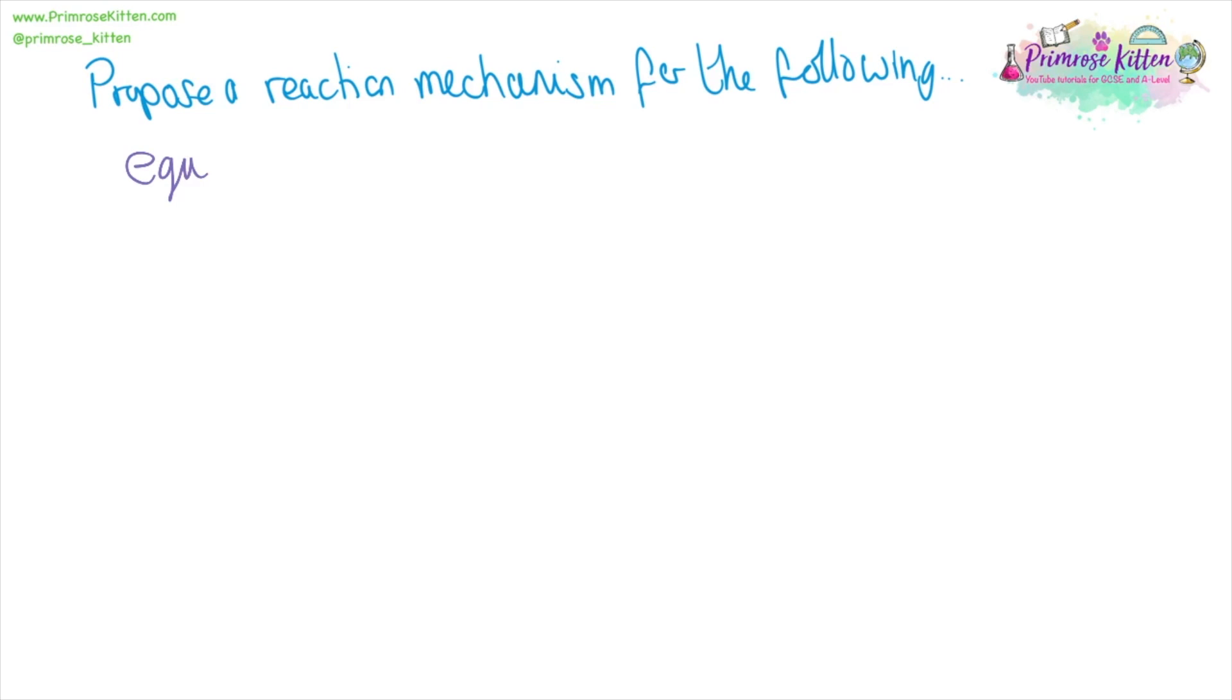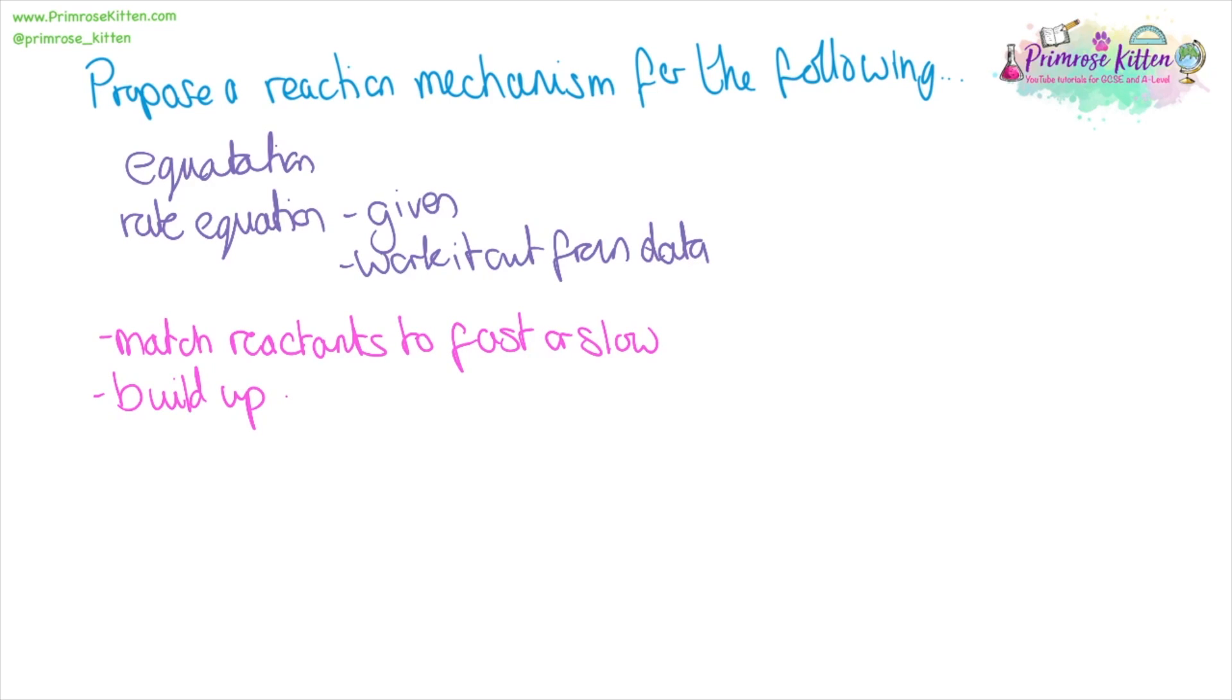You might be asked to propose a reaction mechanism for a set of data. And the data you'll probably get given is the equation and then the rate equation. And the rate equation can either be given to you or you might have to work it out from a set of data that is given to you. I'm going to take you through a set of steps and then work through a load of examples looking at rate mechanisms and rate determining steps. We're going to start by matching the reactants to either fast or slow, building up the equations, identifying the intermediates, and then at the end, we're going to sort out the overall equation.